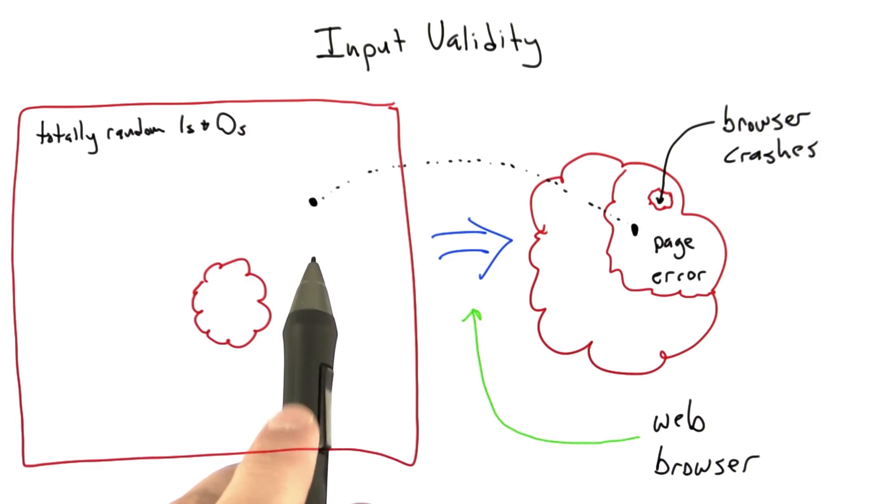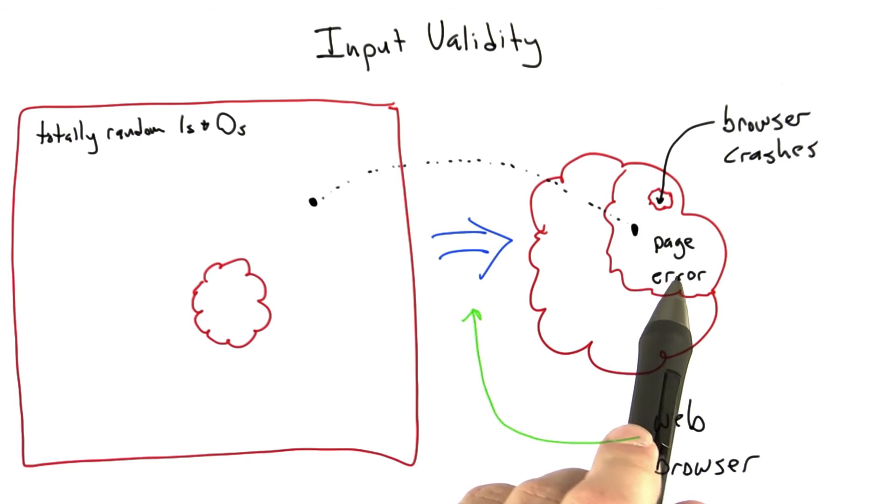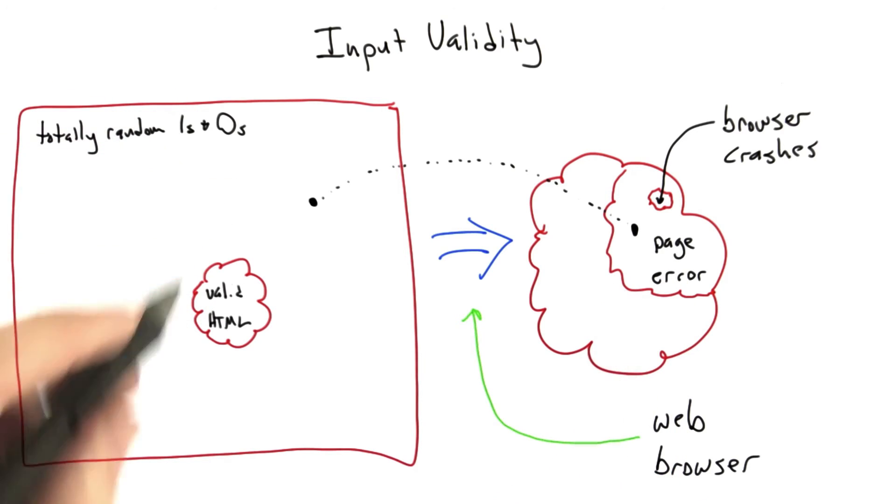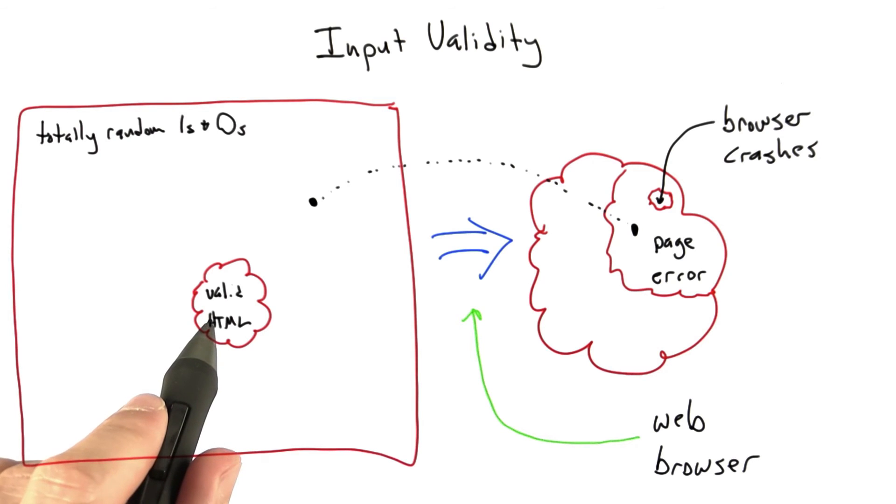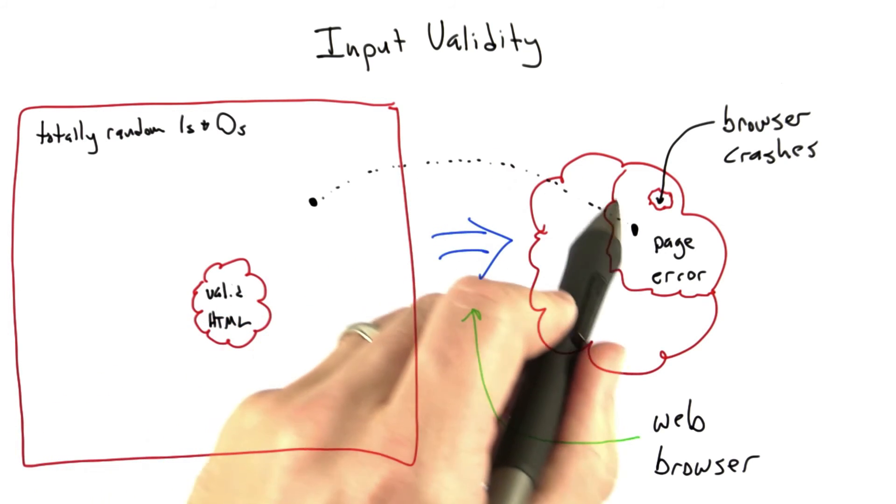But on the other hand, the amount of code in a web browser that serves to classify code as renderable versus not renderable, is some very tiny fraction of the total amount of code in a web browser. And if the fraction of valid HTML is very low, we're going to spend almost all of our time testing this very small part of the web browser.